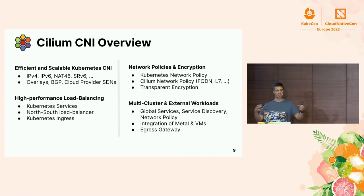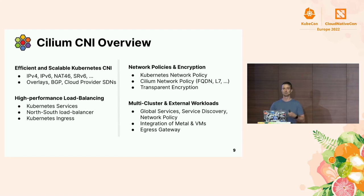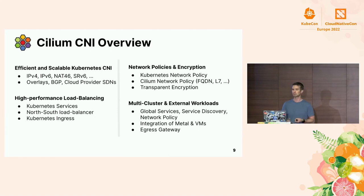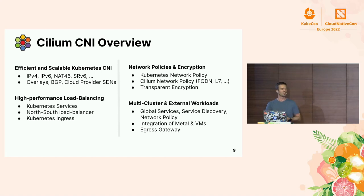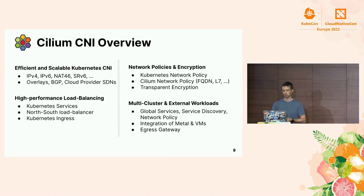Cilium has extensive network security controls — obviously support for Kubernetes network policies — but they can be extended with Cilium network policies to provide, for example, DNS-based policies where you can use DNS names or wildcards to define what is allowed. Also layer 7: HTTP, Kafka, and so on, for even better security policies. On top of segmentation, we can also do transparent encryption with IPsec and WireGuard.